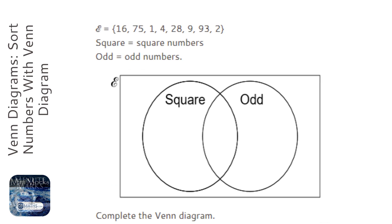Okay, so I'm asked to complete the Venn diagram. The E at the top I like to think stands for everything. So all of those numbers need to fit somewhere in this Venn diagram.